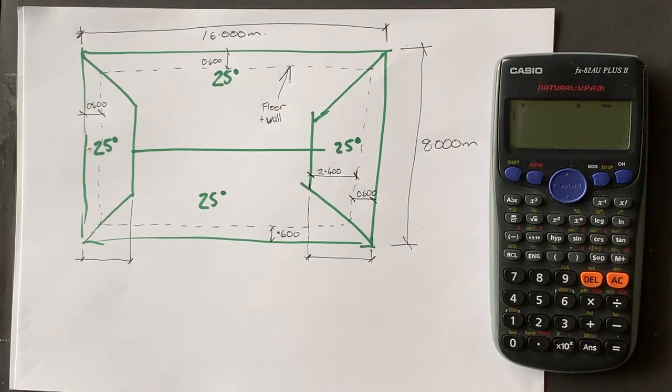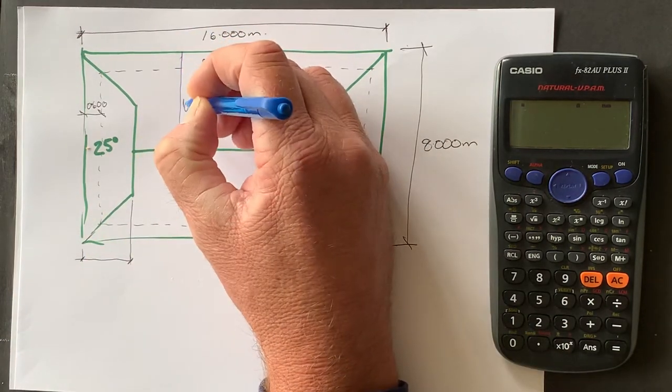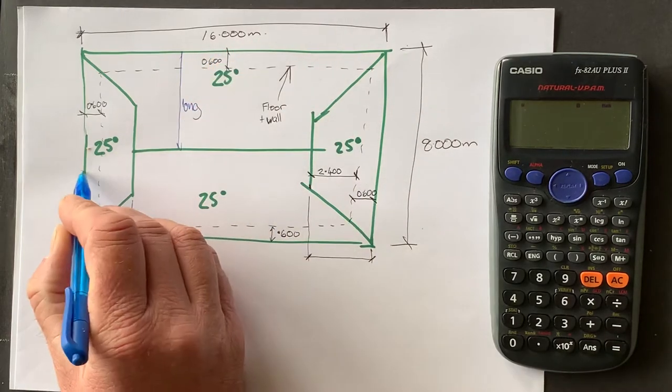Okay, so this video here I'm going to show you how to work out the amount of paper required for this Dutch gable roof. Then I'm going to work out how long a sheet of roofing iron would be for the long side from here to here and then also the short side.